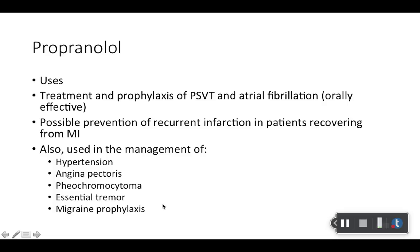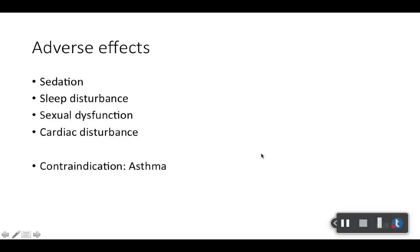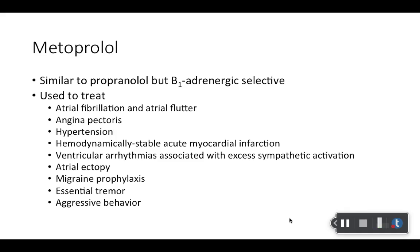Propranolol has many different uses — some we'll talk about in different modules — but it can be used for PSVT and AFib, and specifically for patients recovering from MI. Adverse effects — we talked about some of these before: sedation, hypotension, sleep disturbances, sexual dysfunction, and cardiac disturbances unfortunately, like other antiarrhythmic drugs. Asthma is a contraindication — you can add COPD there too. Basically, a person who has problems breathing — because the beta blockade can make breathing more difficult. That'll be fully explained in the pulmonology module. When you block the beta receptors in the lungs, it makes breathing more difficult.